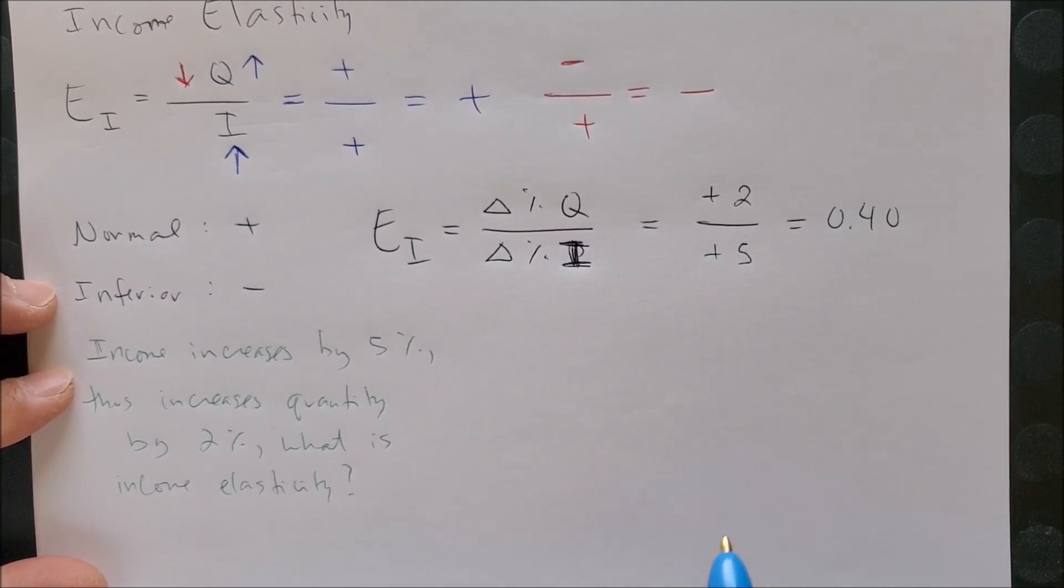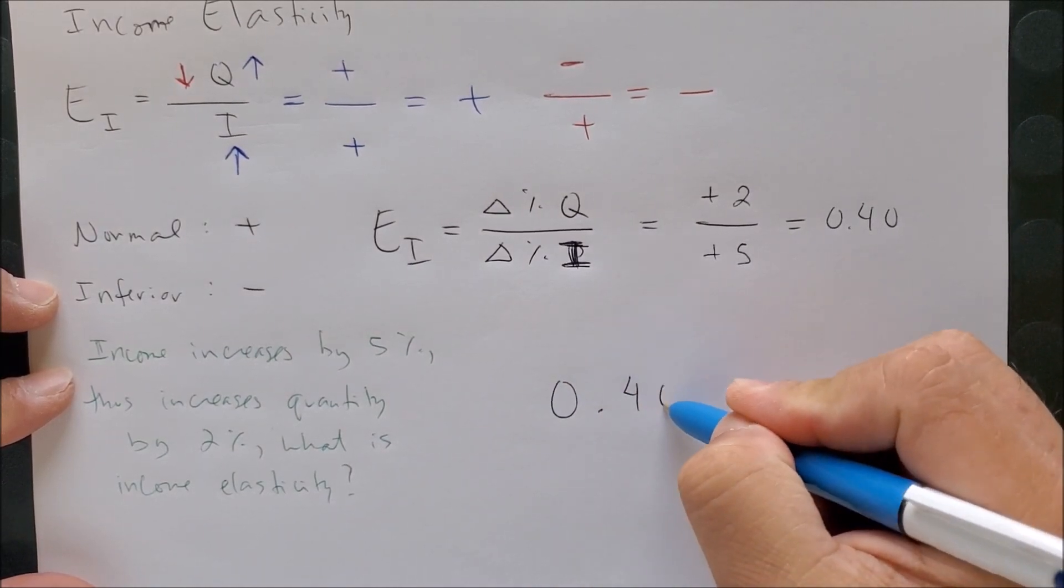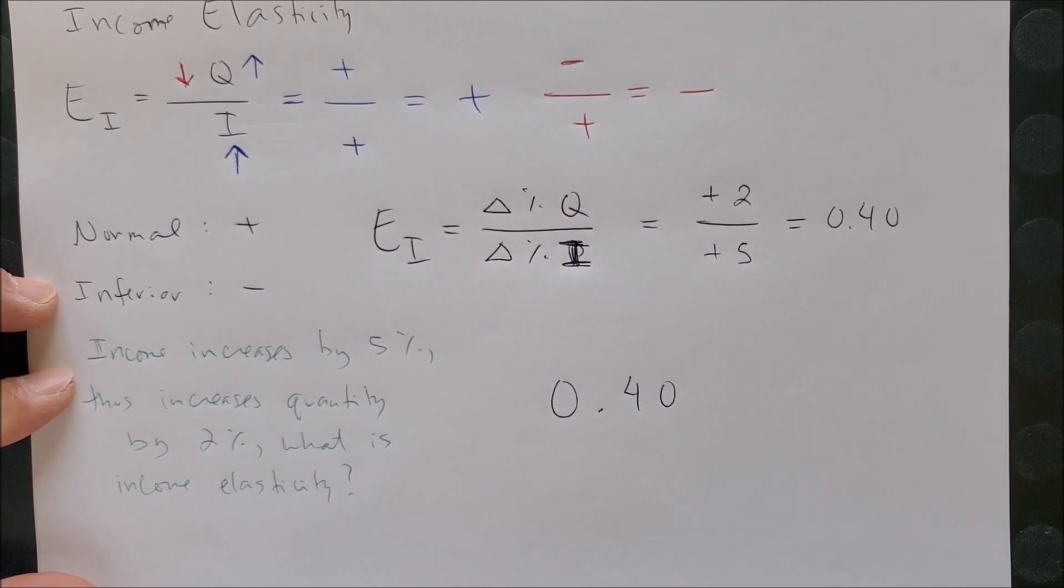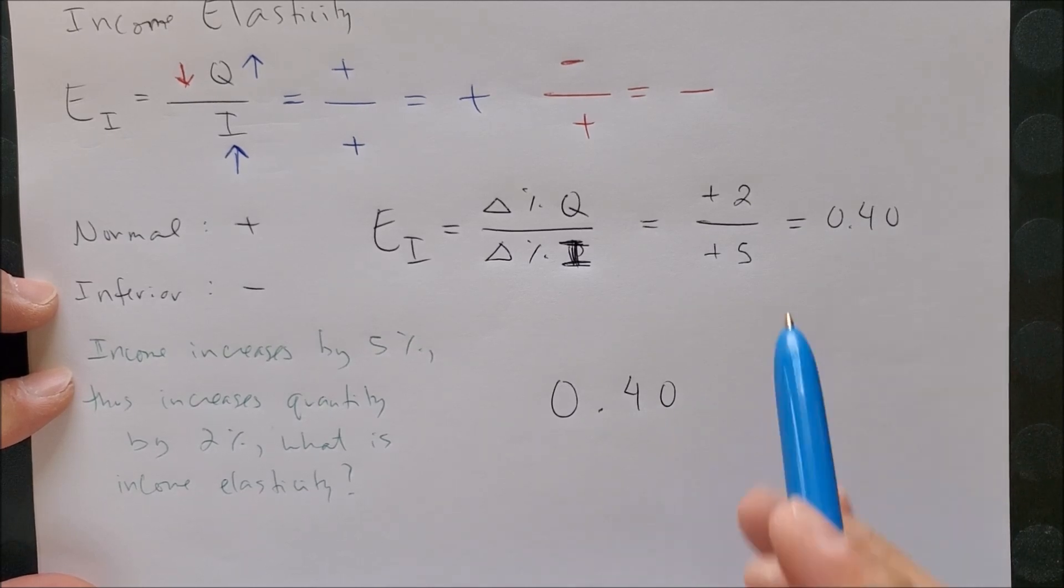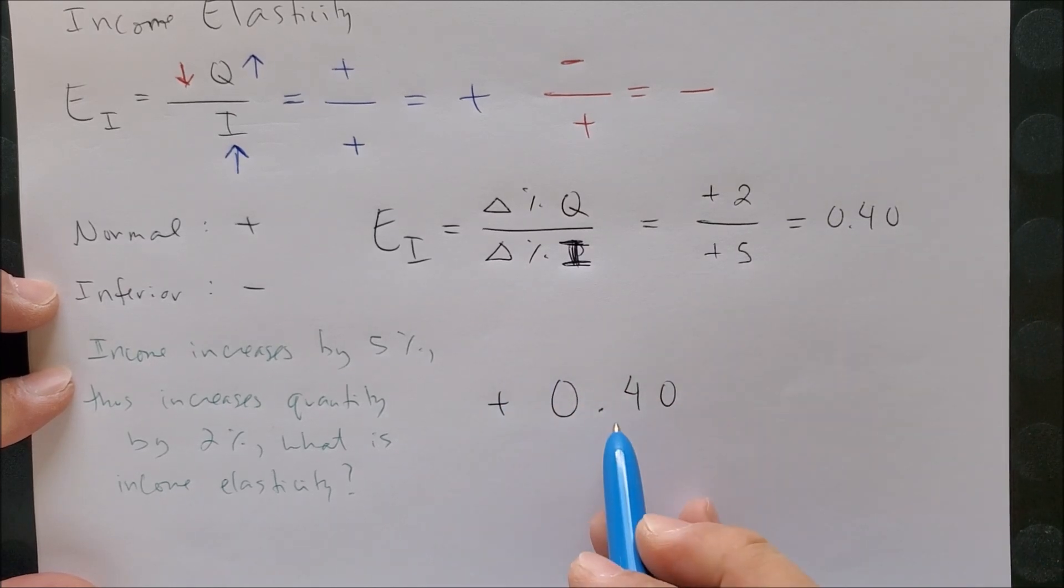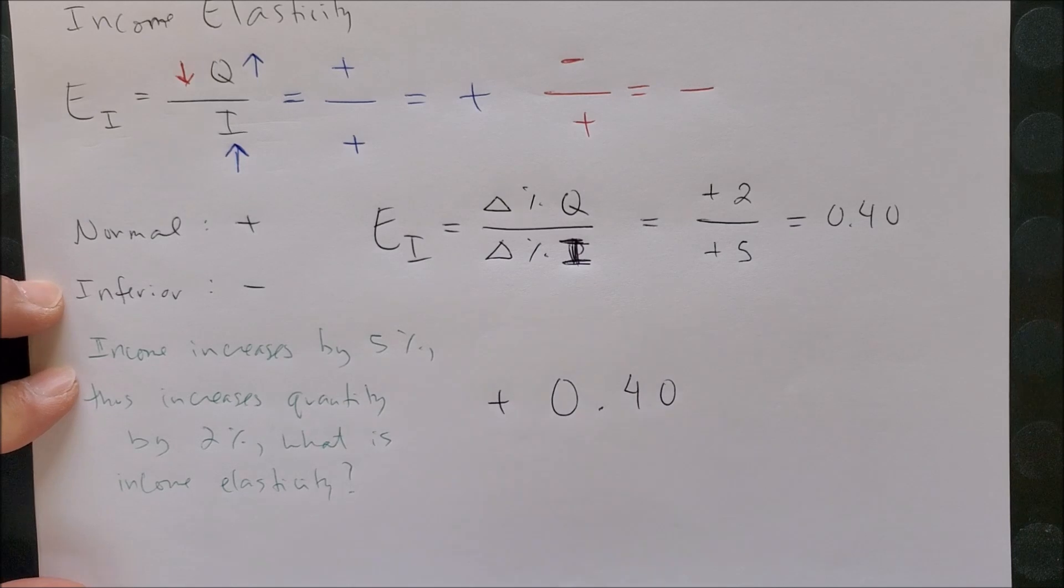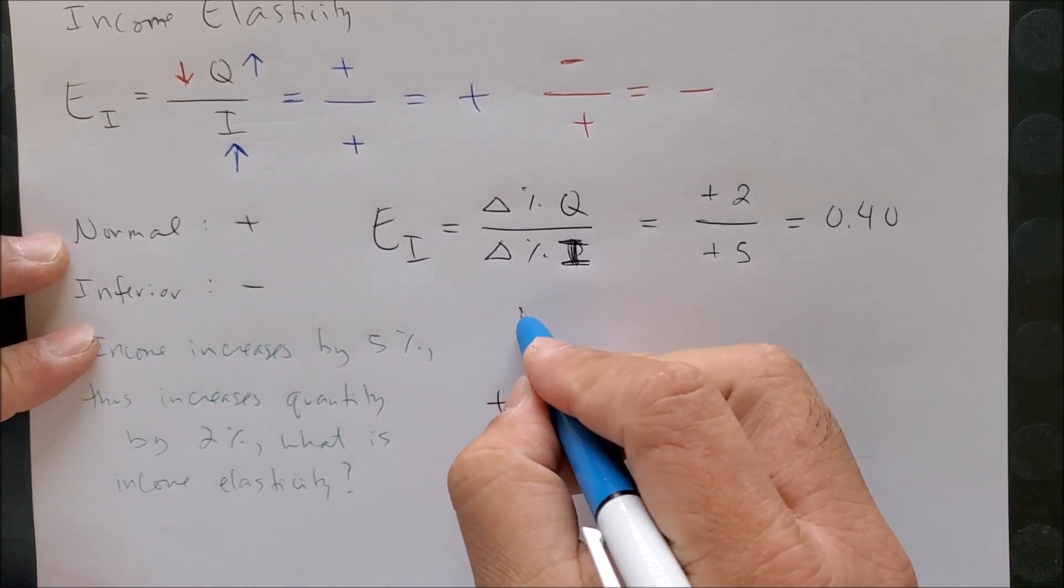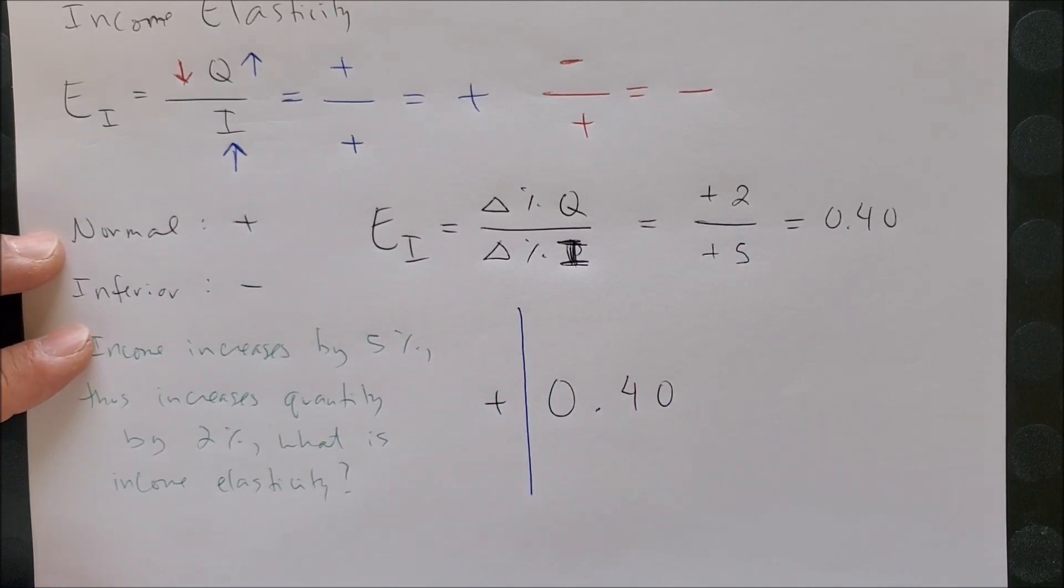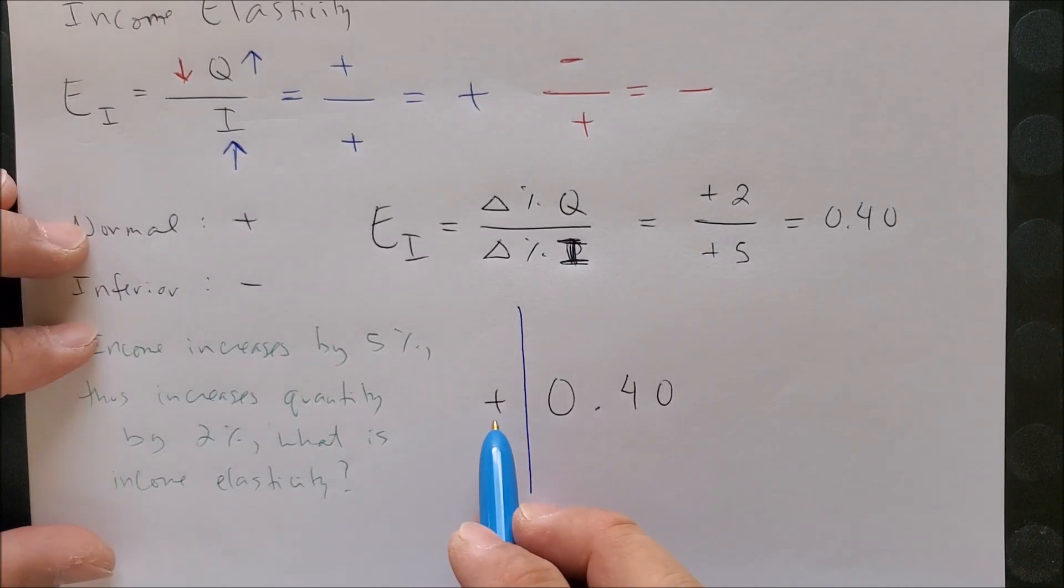Now I'm going to rewrite 0.40 down here to show you that there is a two-part answer. We have a positive value overall and we also have 0.4. So what we can say then with income elasticity is there is a two-part answer. The first part focuses on the actual sign itself. It's positive, so that means it's a normal good.